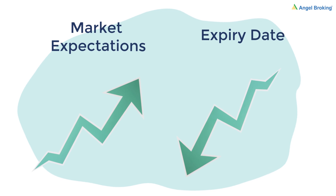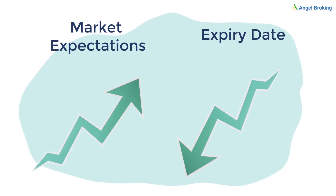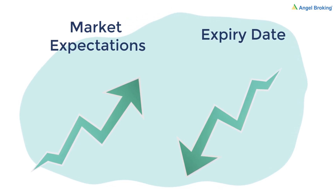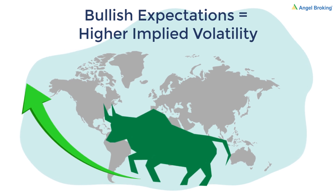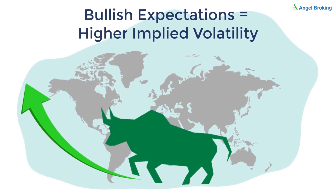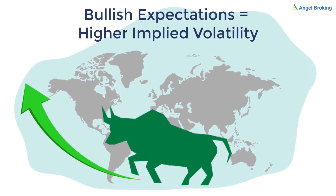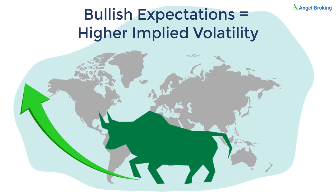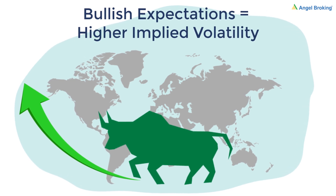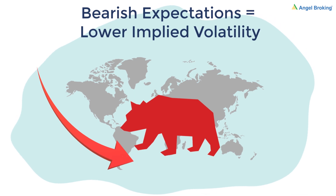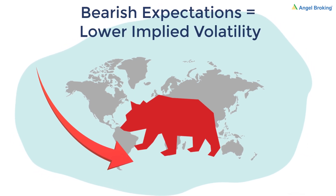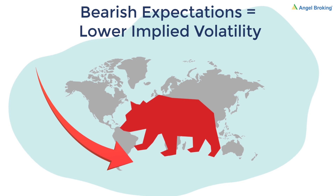Implied volatility is dependent on market expectations and the expiry date. If the market expects the underlying stock to rise in value, then its options' implied volatility will increase. Ye options contract kharidna ab zhaad expensive hooga. Similarly, agar market ko lagta hai ki underlying stock ka value girne wala hai, then the implied volatility and the options price will also fall.